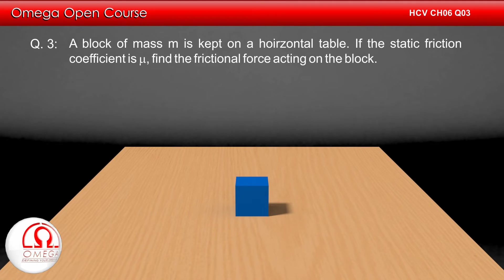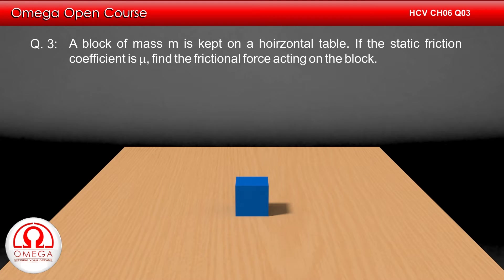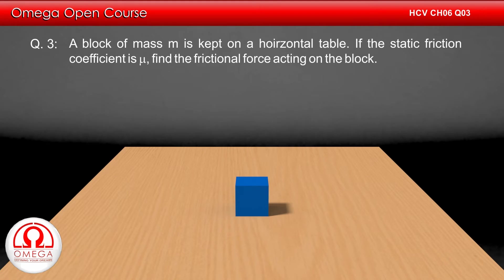Since no horizontal force is applied on the block, the block does not have any tendency to move and hence no friction will act on the block. Hence the force of friction acting on the block is zero. This is our answer.